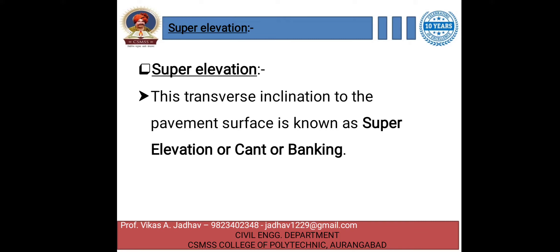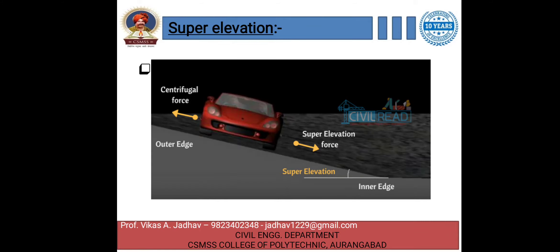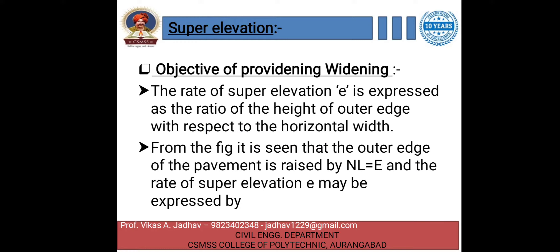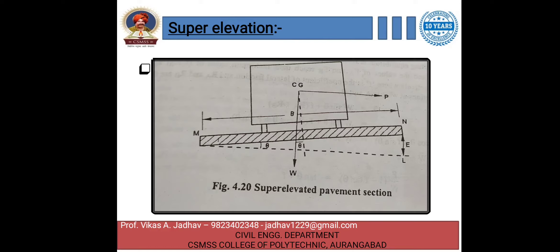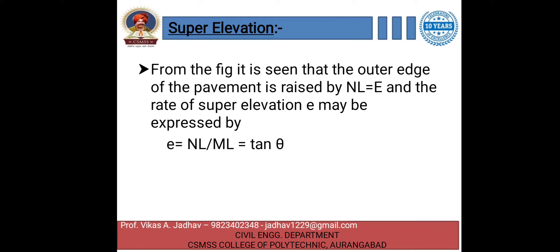The objective of providing super elevation: the rate of super elevation e is expressed as a ratio of the height of the outer edge with respect to the horizontal width. From the figure it can be seen that the outer edge of the pavement is raised by NL. The rate of super elevation e may be expressed as e = NL / ML = tan θ.